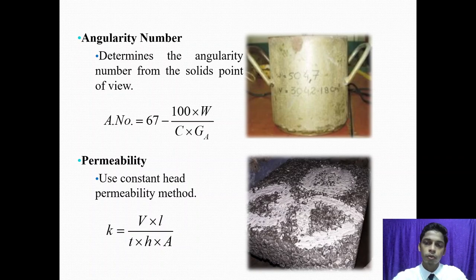To determine the permeability, here we use constant head permeability method. Place the equipment over the sample as shown in the figure and then pass the water of 1000 ml at a constant rate. Then using the constant head formula to determine the pavement permeability. Where K is the permeability, V is the total volume of water passed, L is the length of the sample, and T is the total time required to pass the water, and H is the constant head height, and A is the area of the sample.